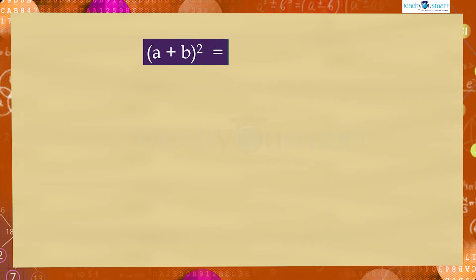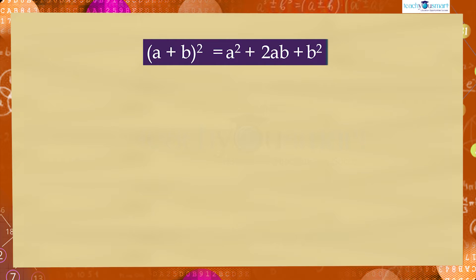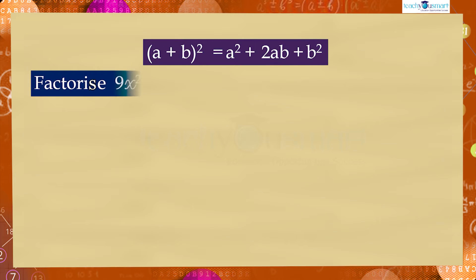Let's consider the identity (a + b)² = a² + 2ab + b² and check how this identity is helpful for the factorization of an algebraic expression through an example. Factorize: 9x² + 12x + 4.